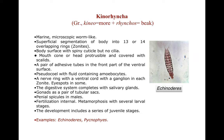The digestive system is complete with salivary glands. Gonads are present as a pair of tubular structures. In males, penile spicules are present. Fertilization is internal. Metamorphosis is present with several larval stages, and development includes a series of juvenile stages. Examples are Echinoderes and Pycnophyes. Here you can see Echinoderes.